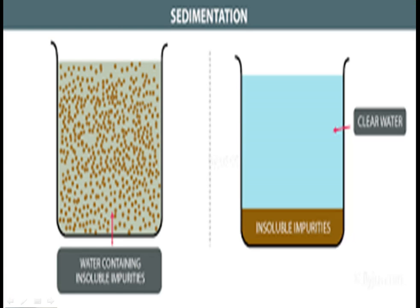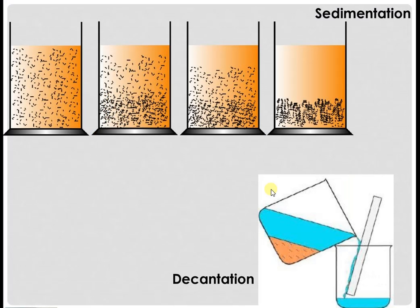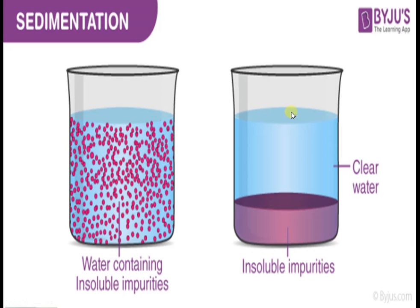Take a mixture of soil and water in a glass tumbler and keep it undisturbed for some time. What do you observe? You will find that the sand and mud particles in the soil settle at the bottom of the glass tumbler. These are called sediments. This process of separation of mud and sand is called sedimentation.